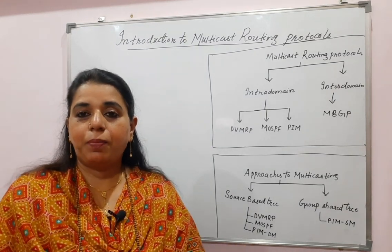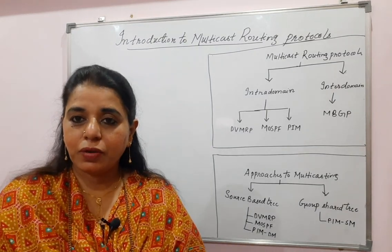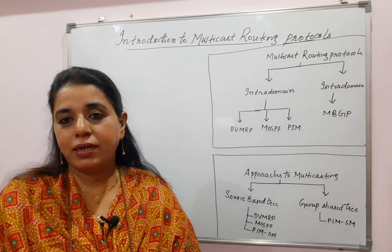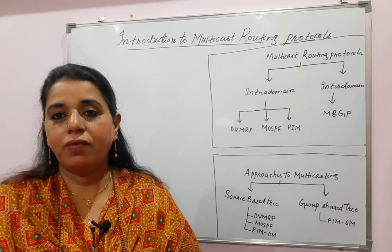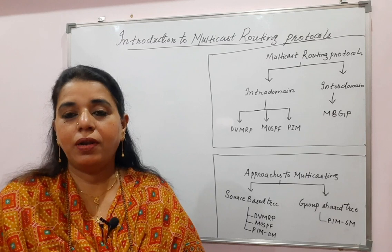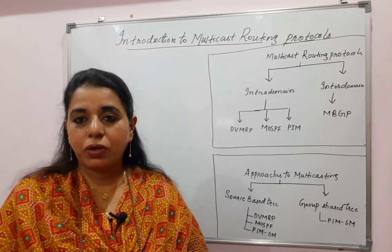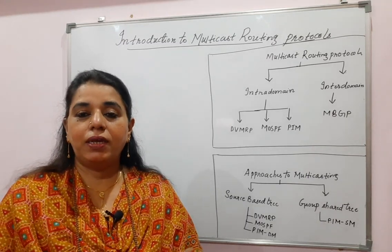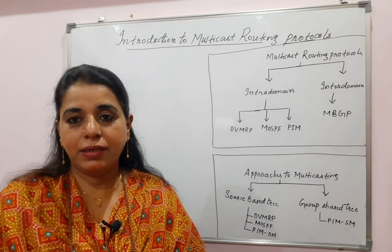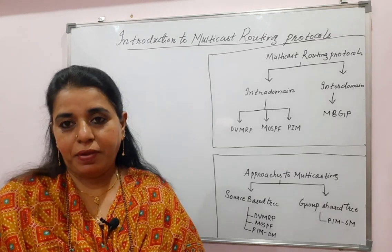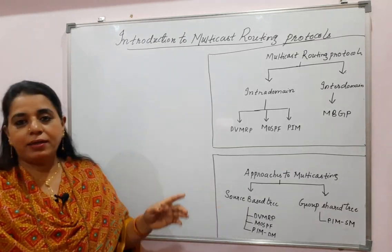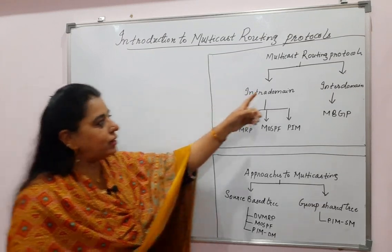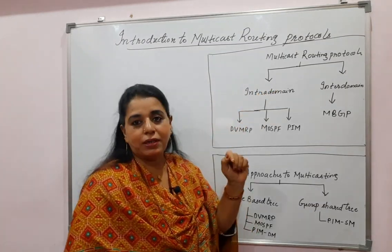The protocols for each algorithm: for the distance vector, the protocol is Routing Information Protocol (RIP). For the link state, it is Open Shortest Path First (OSPF). And for the path vector routing, the protocol is Border Gateway Protocol (BGP). Similar to that classification, we have the classification for multicast routing protocols as well.